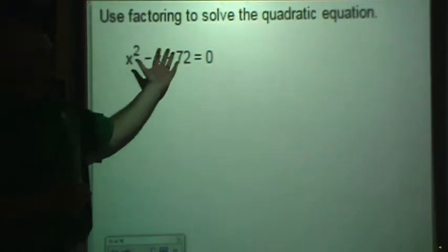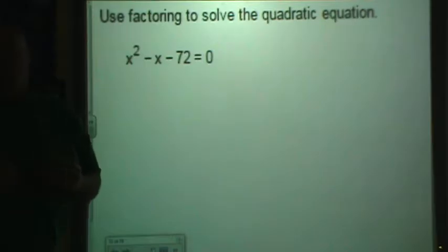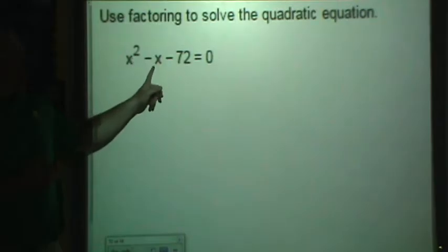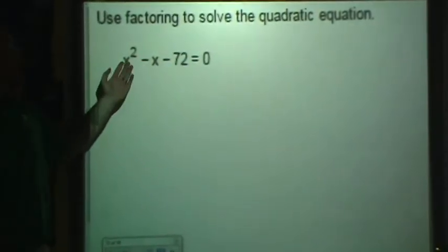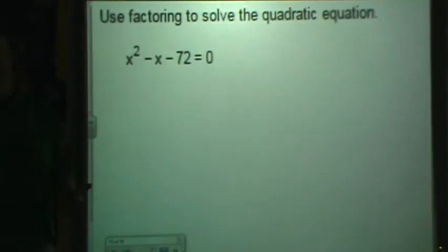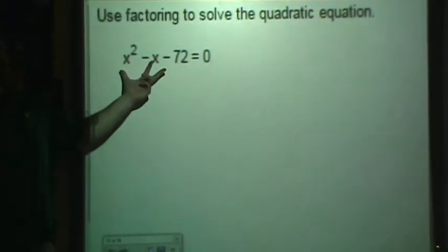So first of all, quadratic equations have to be set equal to zero when we solve them. Why is this quadratic? Why is it considered quadratic? Because we have x squared, we have an x term. This constant is not necessary, but it's still part of this. We would call this a quadratic trinomial equation. How many times have you heard that? Trinomial because it has three terms.